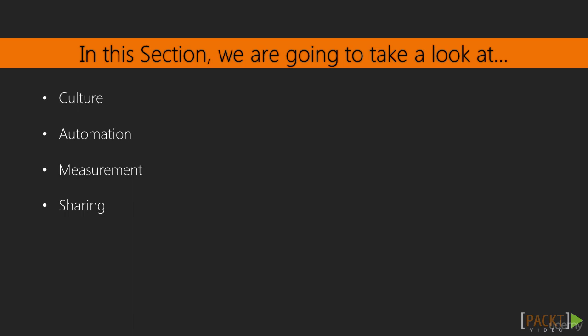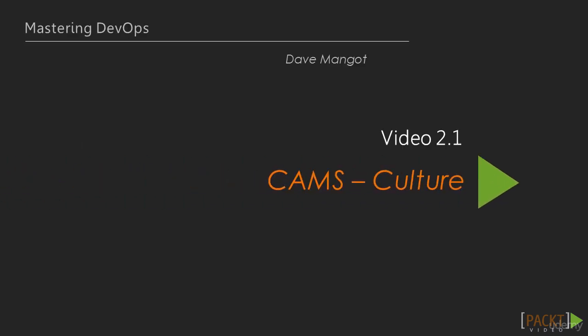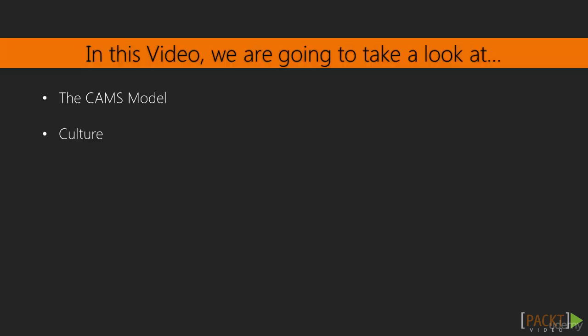The things that we practice in order to have an effective DevOps culture. So we're going to talk about culture, automation, measurement, and sharing. In this video we're going to talk about the C of CAMS — culture. We'll discuss the model at first in general, and then we'll get into some specific examples about culture.